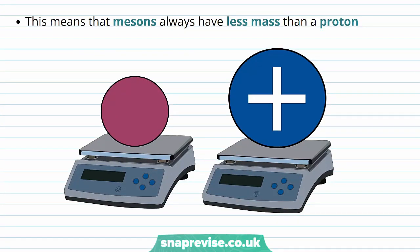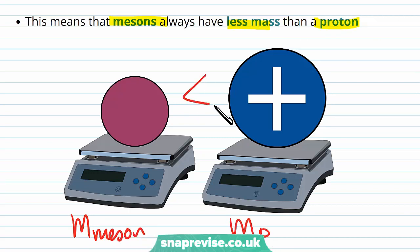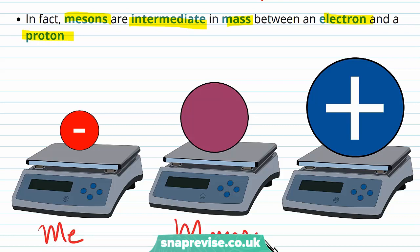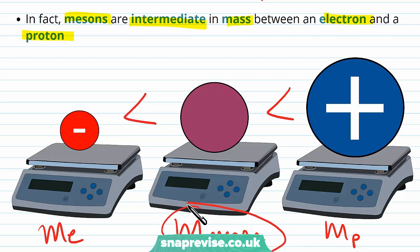Since mesons can't decay into protons, mesons always have less mass than a proton. In fact, mesons are intermediate in mass between an electron and a proton — the proton has the greatest mass and the electron has the smallest mass, so the mass of a meson comes somewhere in between the two.